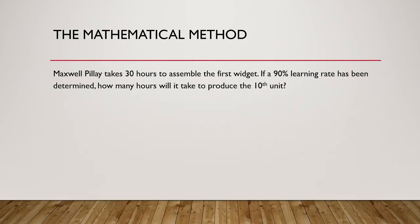The major benefits of the mathematical model are that we can calculate the average time for any number of units and are not limited to doubling points. It is also more efficient as we can calculate any point independently. This allows us to calculate the time taken for specific individual units. Looking at the next example with Maxwell Pillay, we are asked to calculate the time taken for the 10th unit specifically — not the average or total time for the first 10 units, but the time of the 10th unit by itself.